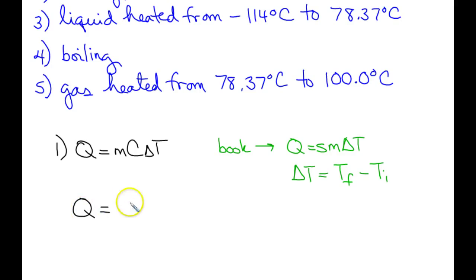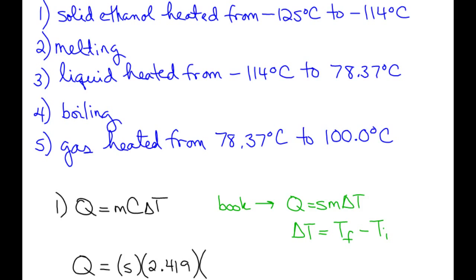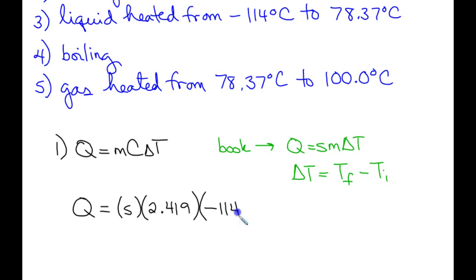So let's plug these numbers in. For this step, Q is going to equal 5 times, and I'm using these numbers that were written at the very top of the screen. The specific heat capacity for the solid listed was 2.419 joules per gram degree Celsius. And if we scroll back up, we said we are heating it from negative 125 to negative 114. So our final temperature is negative 114, and our initial temperature was negative 125.